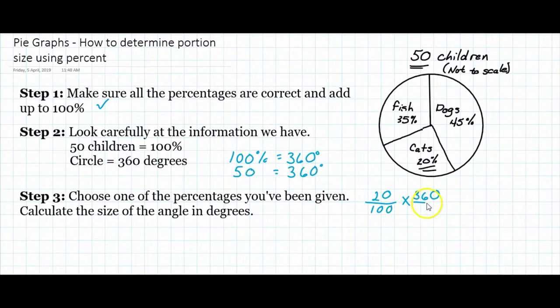Now we just multiply it across, and that's going to be 7,200. 20 times 360 is 7,200, and 100 times 1 is 100. So 7,200 divided by 100 gives us 72 degrees. That means the cats' portion is 72 degrees.